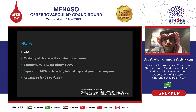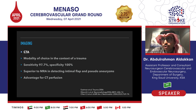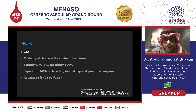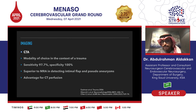CTA is the modality of choice, especially in the context of trauma. Most of those patients go to the CT scanner to get the pan-CT, and we typically include the CTA, especially in someone who is comatose, as part of the assessment of brain or neurological function. CT is the way to go in the context of trauma. It has very high sensitivity and specificity, and it can be superior to MRI in detecting intimal flap and pseudoaneurysms.